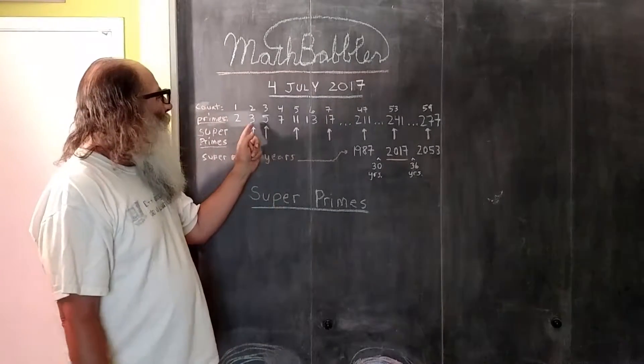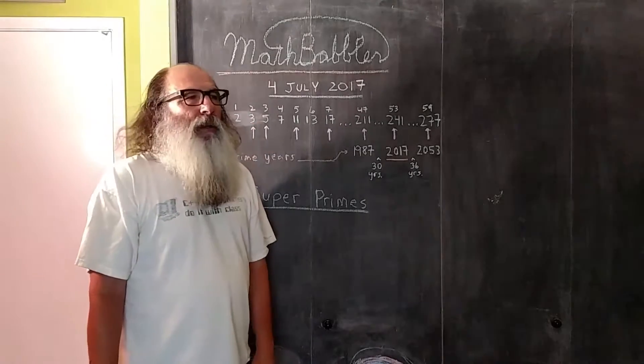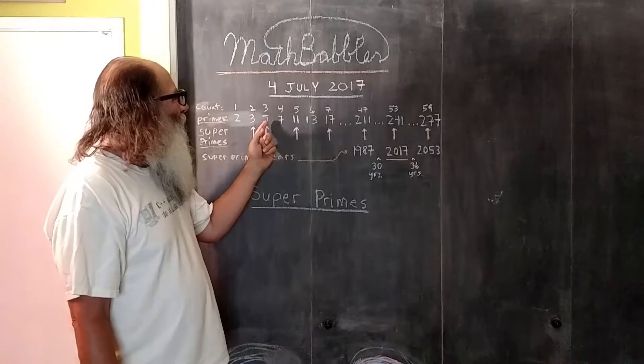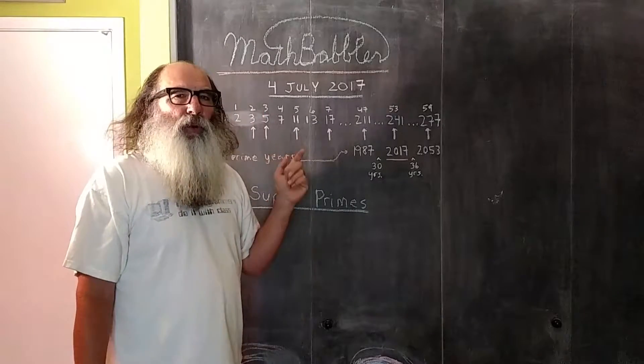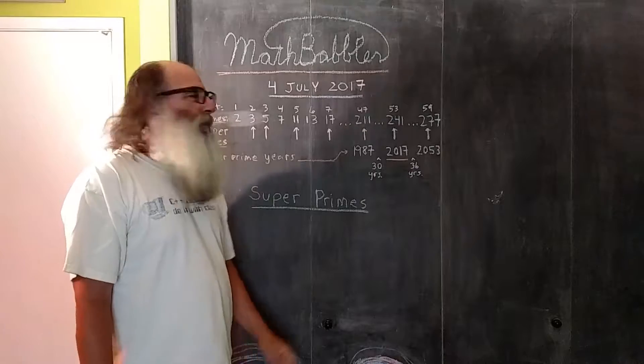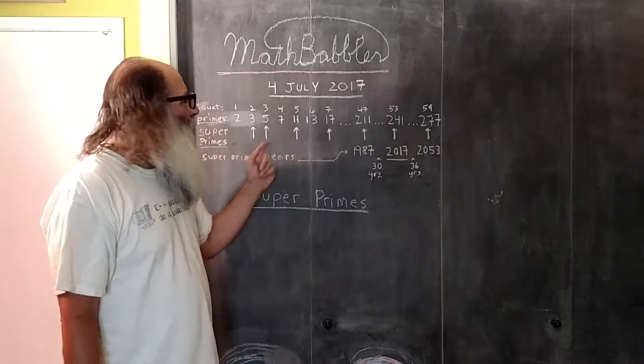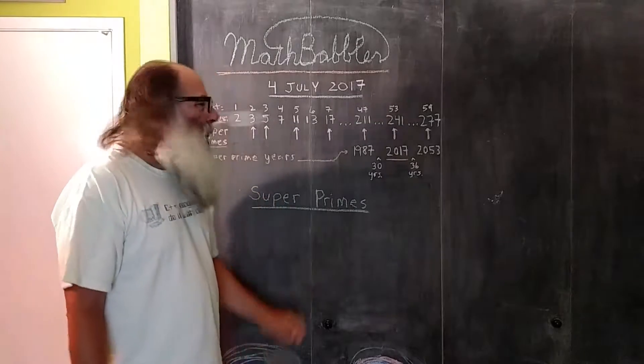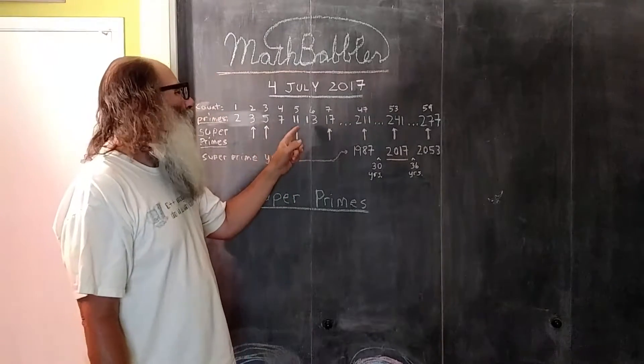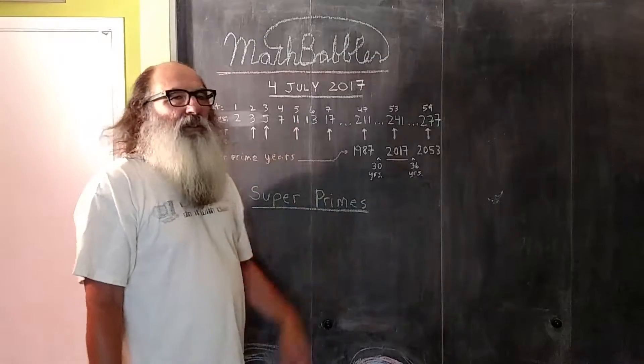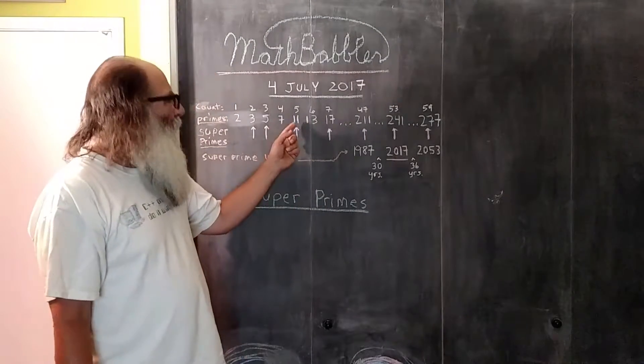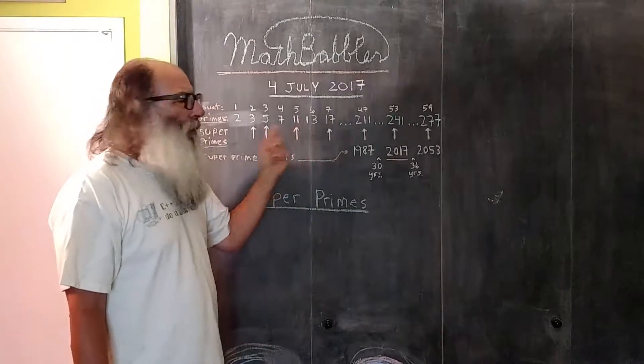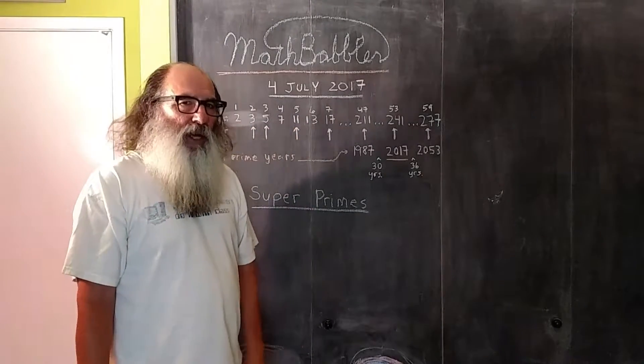3 is prime number 2. 2 is prime, so that makes 3 a super prime. 5 is the third prime number. 3 is prime, so that makes 5 a super prime. 7 is the fourth prime number. 4 is not prime, so 7 is not a super prime. 11 is the fifth prime number. 5 is prime, so 11 is super prime.